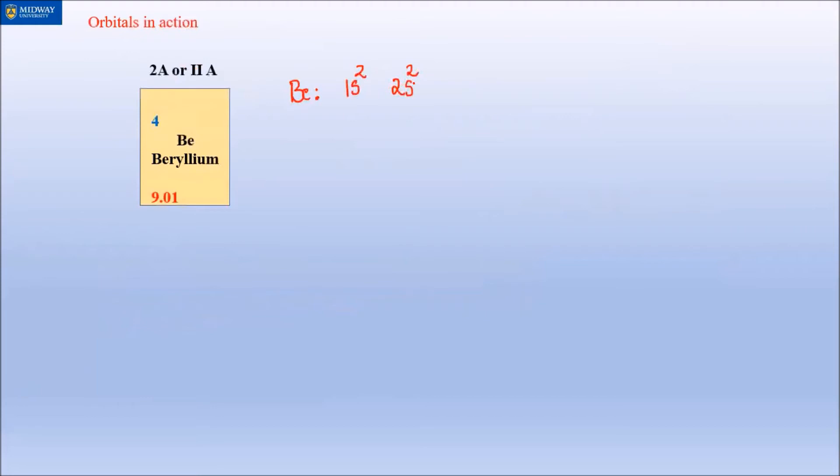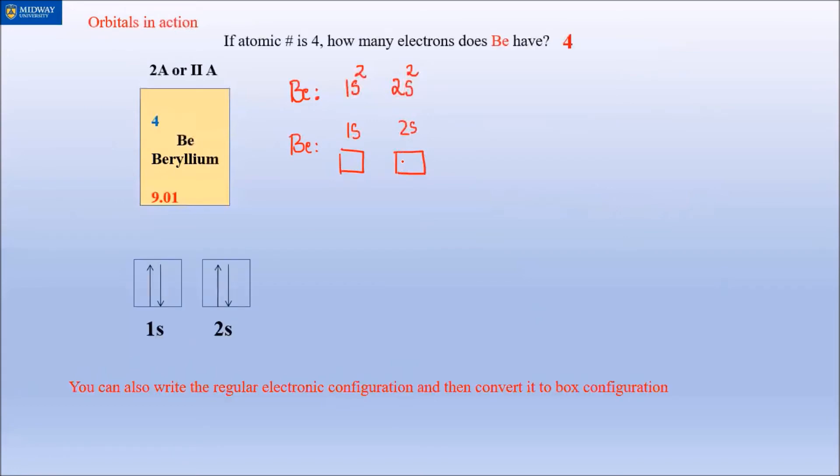Now let's write the boxes for each of them. So 1s - for s, only one box. 2s - it's still an s, so one box. We got two electrons, so you put one up and one down. For 2s again, one up and one down.